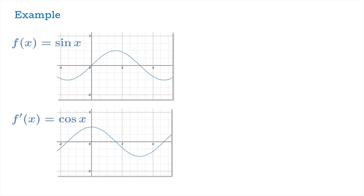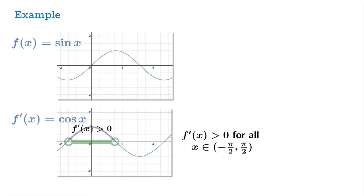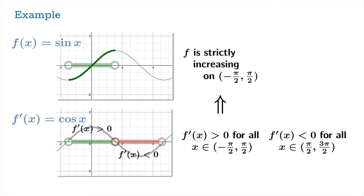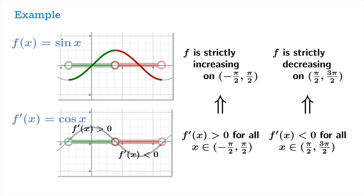If you just point to a random function, it's very unlikely that it's going to be monotonic on its domain — rarely do you have functions that are either strictly increasing or strictly decreasing throughout their domain. Most functions will have variations in behavior, and you'd like to analyze where these transitions occur. For example, here's the derivative of sine — the cosine function. The value of the derivative is positive on the open interval from negative pi over 2 to pi over 2, and negative on the open interval from pi over 2 to 3 pi over 2. So f is strictly increasing on the first interval and strictly decreasing on the second.